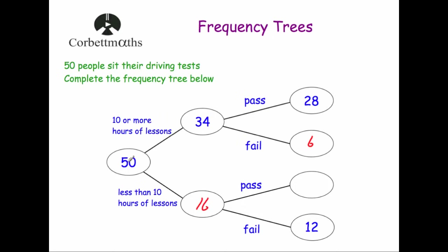Now for the people who took less than 10 hours of driving lessons — that's the 16. We know that 12 of them failed, which means the rest passed. So 4 of them passed, and we've completed the frequency tree.